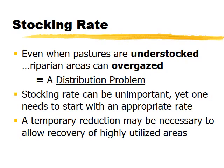On stocking rate: a pasture can be understocked overall but overgrazed at the riparian area, which indicates a distribution problem. Temporary reductions in stocking rate may be necessary to give highly utilized areas a chance to recover, but simply changing stocking rate generally does not solve riparian area problems on its own.